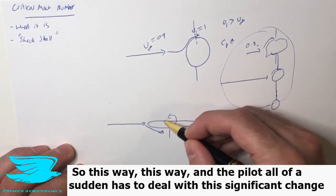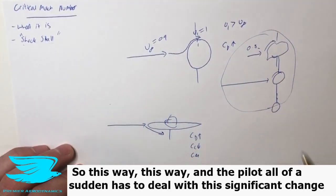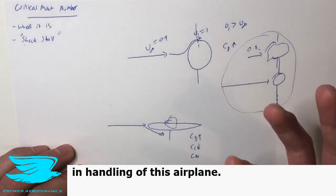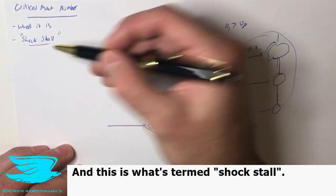So it might pitch this way, it might pitch this way, and the pilot all of a sudden has to deal with this significant change in handling of this airplane. And this is what's termed shock stall.